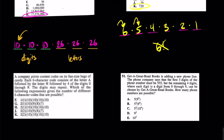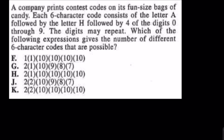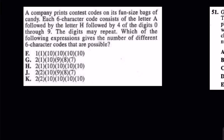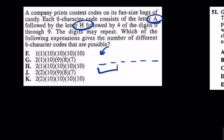Let's go to the next one. A company prints contest codes on each of a fun-sized bag of candy. There are six slots, but this one's a little harder because the first letter has to be an A and the second letter has to be an H, followed by four digits from zero through nine. Those first two slots are locked up — one has to be A and one has to be H — so how much of a say did I have? Only one choice in each of those slots. Digits may repeat, so for the remaining four digit slots I have ten, ten, ten, and ten. Therefore the answer is F.